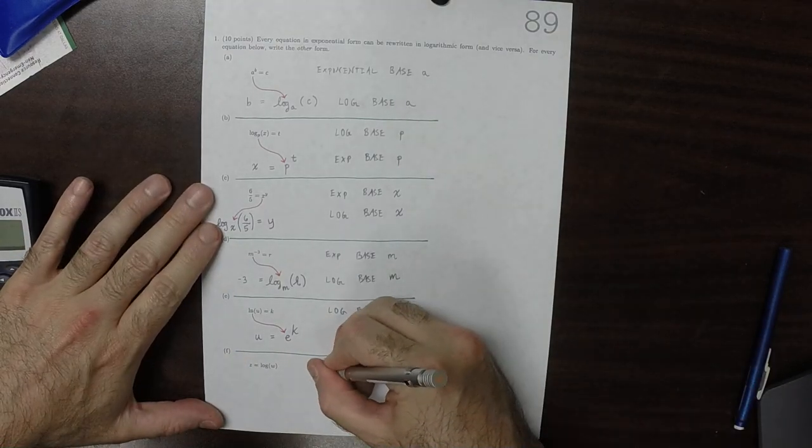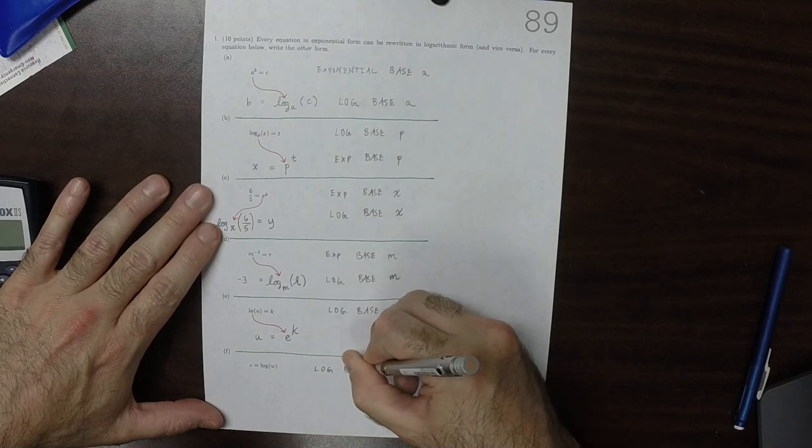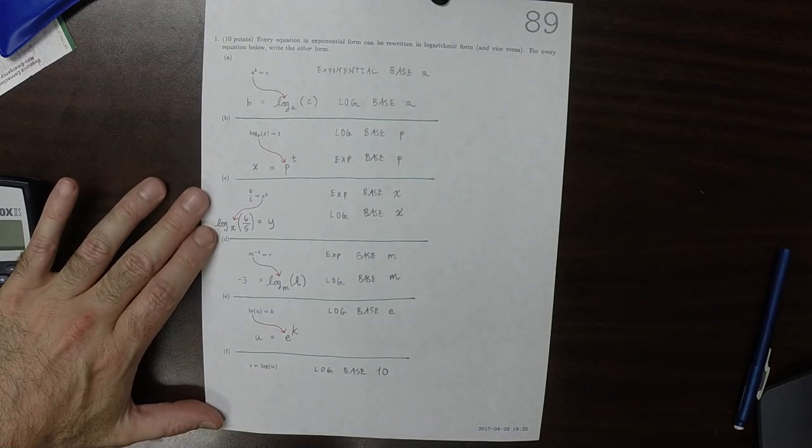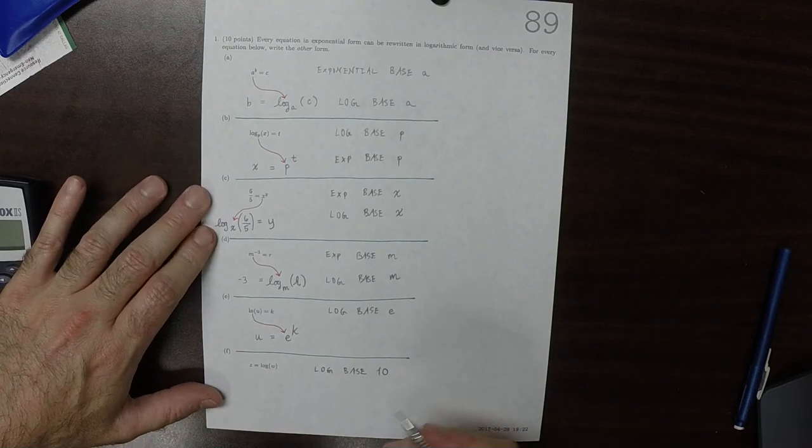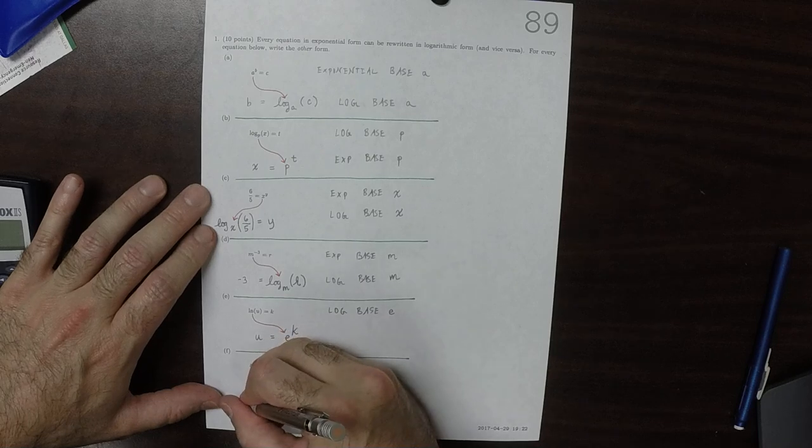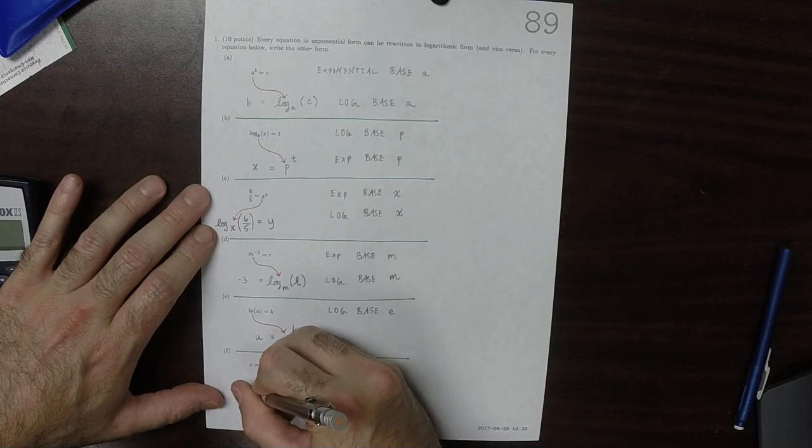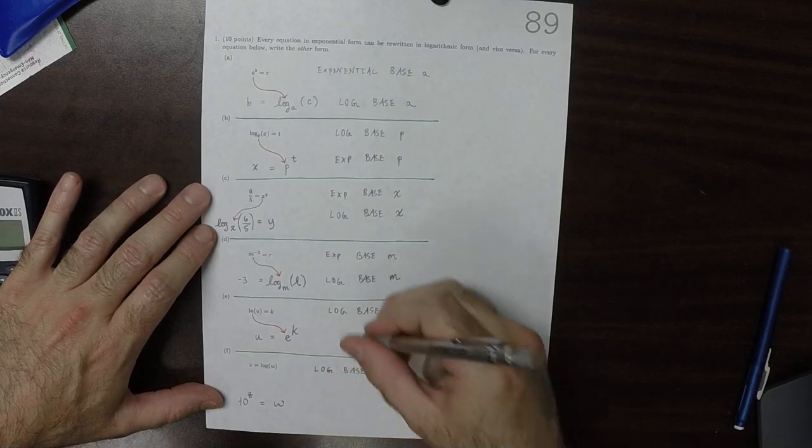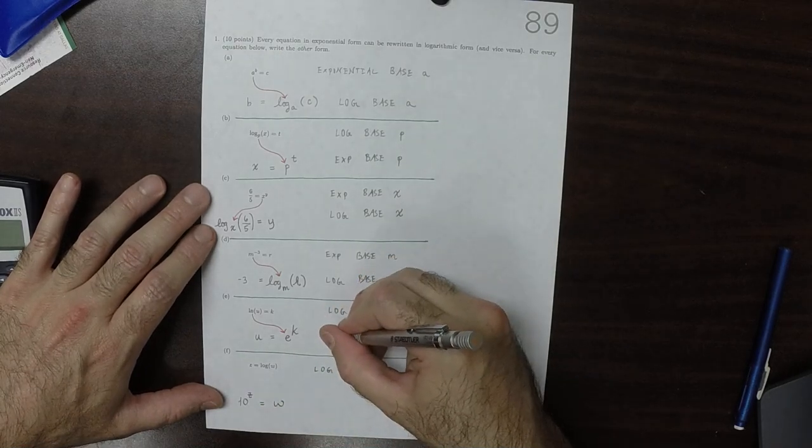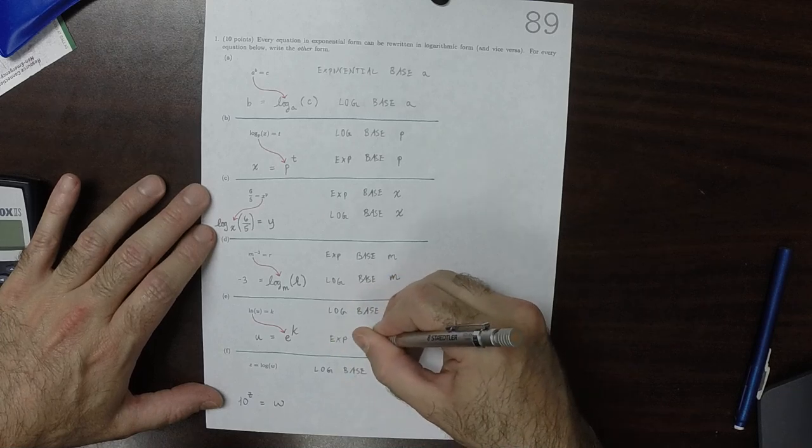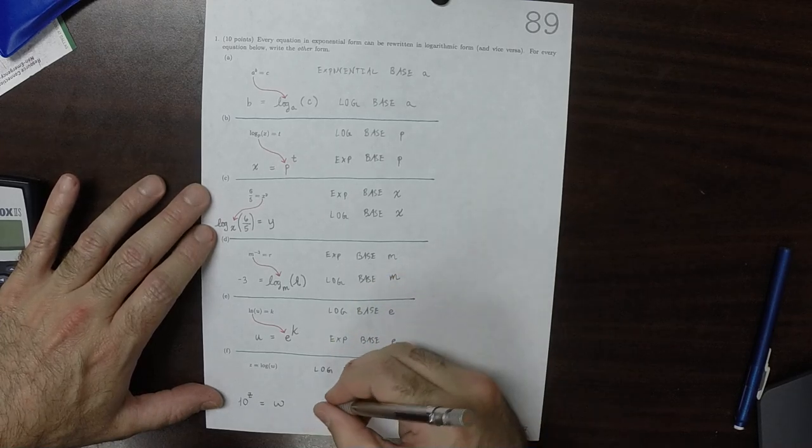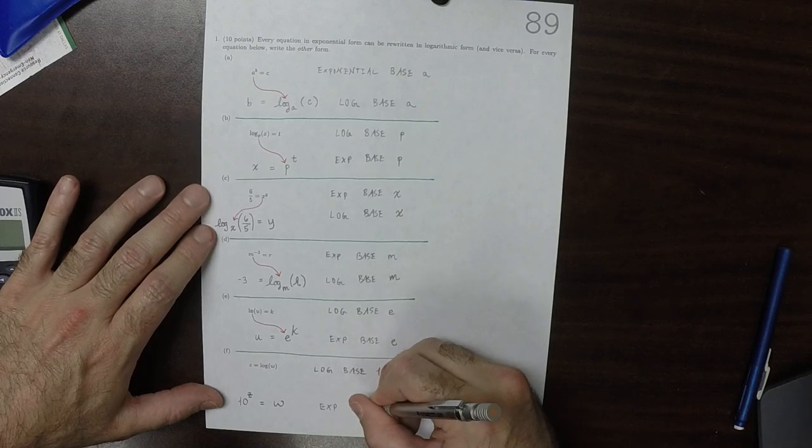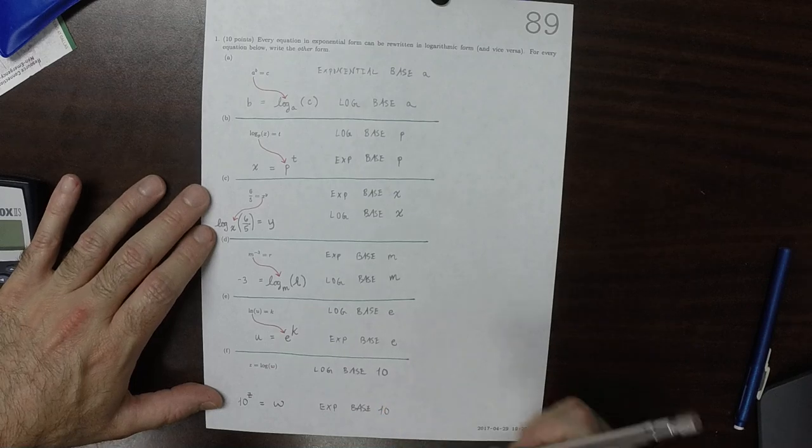This is in log base 10. So it's base 10 on the right. So the base will move to the left. So it will be 10 to Z is W. So this was exponential base E. And this will be exponential base D.